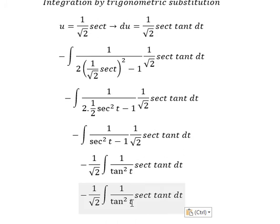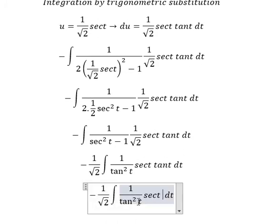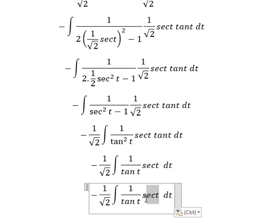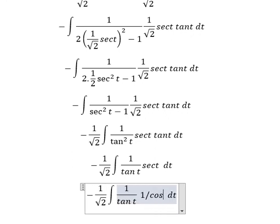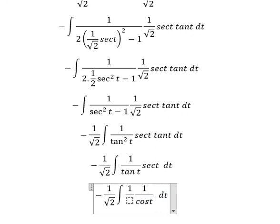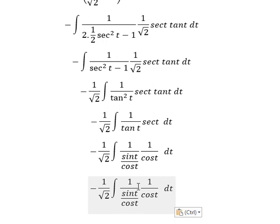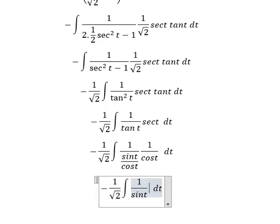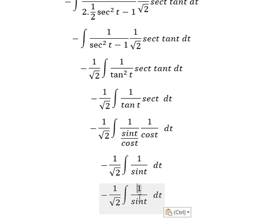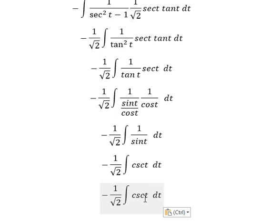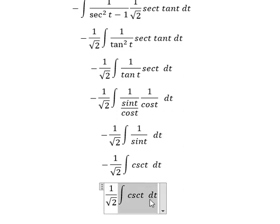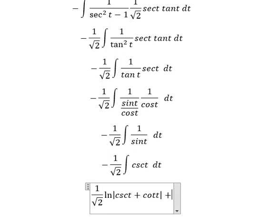Now take part two. Secant of t we change for one over cosine t, and then cosine t over cosine t simplifies. Cosine t divided by cosine t gives us one over sine t, and we change for cosine of t. Negative with cosine of t we can change into ln of the absolute value of cosine of t, plus cosine t, and we put plus C.